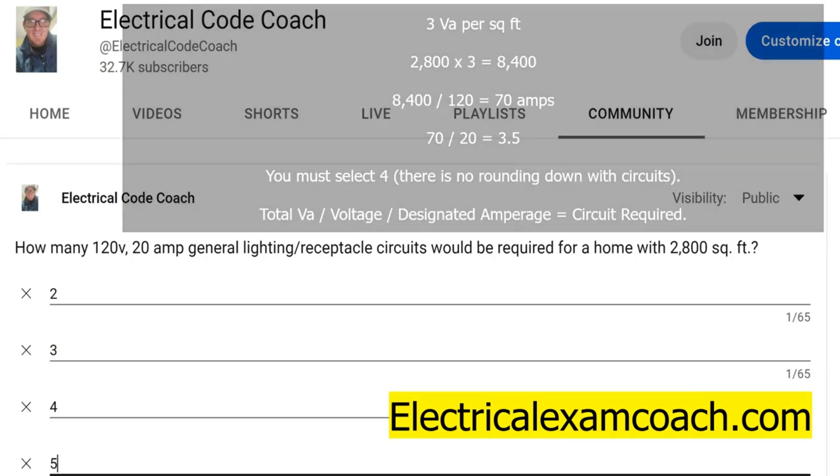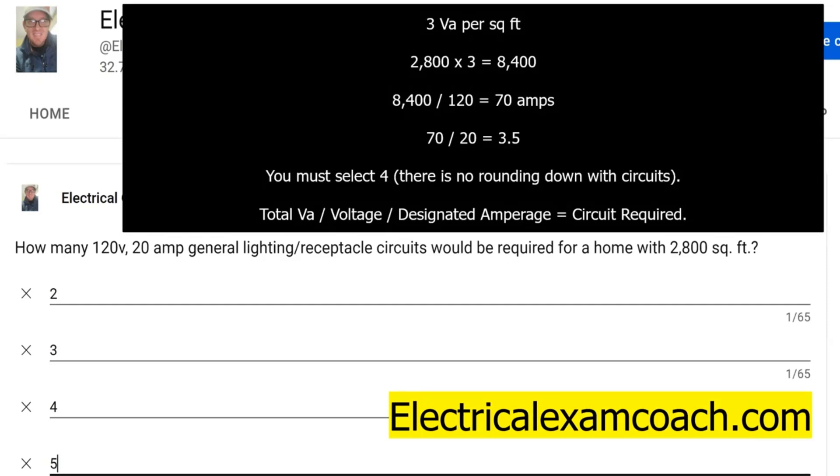Now we know that it's 3 VA's per square foot for this residential home. If you don't know that, you can head over to electricalexamcoach.com and learn all about it from scratch. We take our 2,800 square feet, multiply it by those 3 VA's per square foot, and that's going to equal 8,400 VA's.